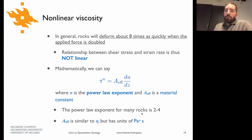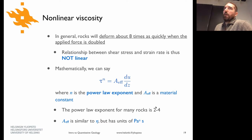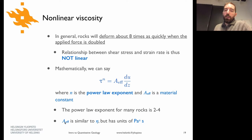For most rocks, this exponent n would be somewhere between two and four, and can be determined from experiments where you basically squeeze rocks inside a press. You can calculate what the power law exponent is, as well as this effective viscosity value A here — it's basically like viscosity but with units of pascals to the n seconds because you've got stress to the n.